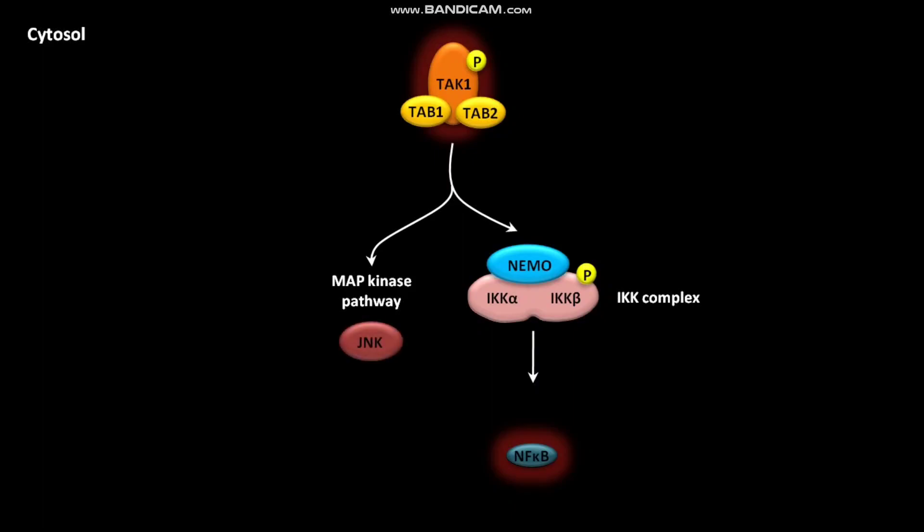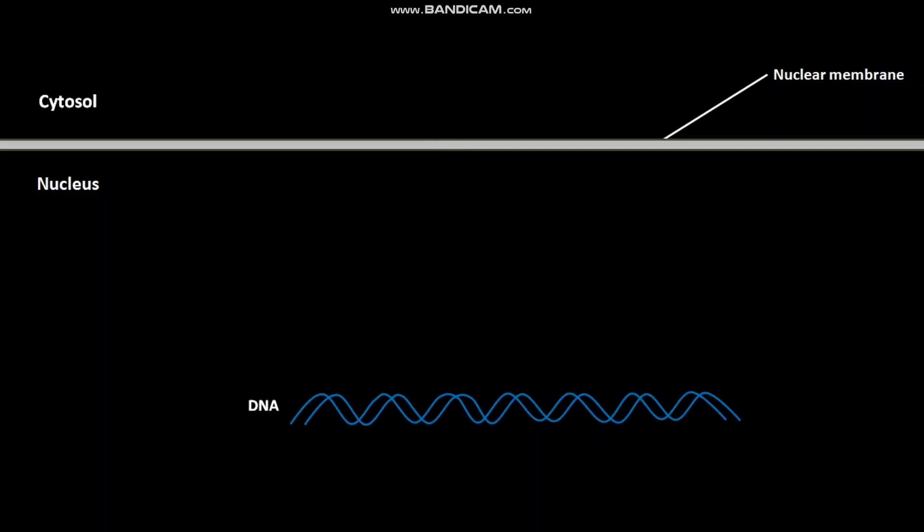The active NF-κB and active AP1 then move towards the nucleus and enter it.